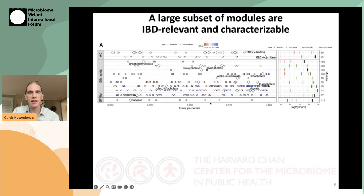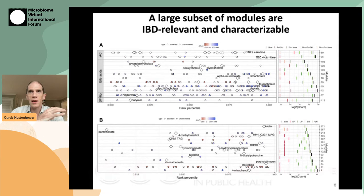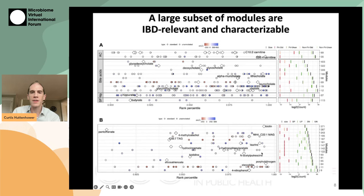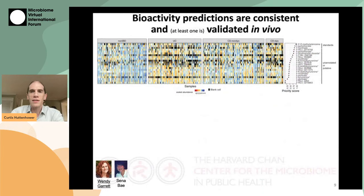What was even more interesting than these new compounds prioritized in known classes are a handful of newly prioritized chemical classes in IBD. This included things like the urobilin pathway derivatives, histidine pathway derivatives, and some B vitamin derivatives — which, if we zoom into module number 287, was one of the specific cases that we looked into in some detail.